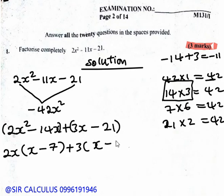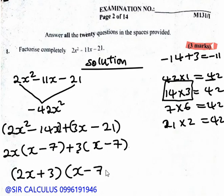3 times x gives 3x. 3 times 7 gives 21. So we have 2x times (x minus 7) plus 3 times (x minus 7). This bracket is common, so the final answer is (2x plus 3) times (x minus 7).